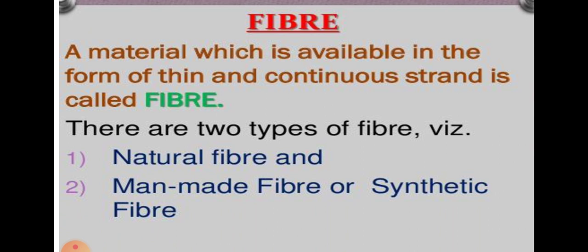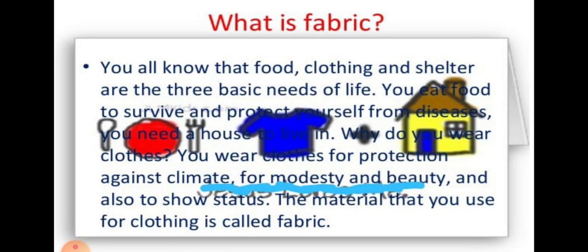There are two types of fiber: natural fiber and man-made fiber, also called synthetic fiber. Next word is fabric. Food, cloth, and shelter are our basic needs of life. You eat food to survive, you need a house to live in. The material that you use for clothing is called fabric.